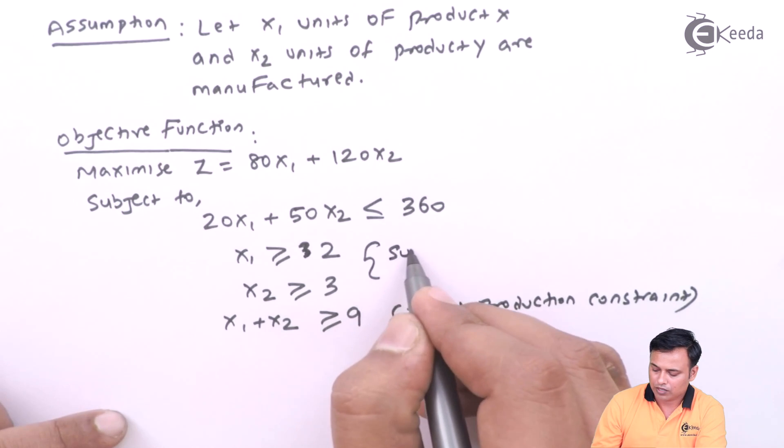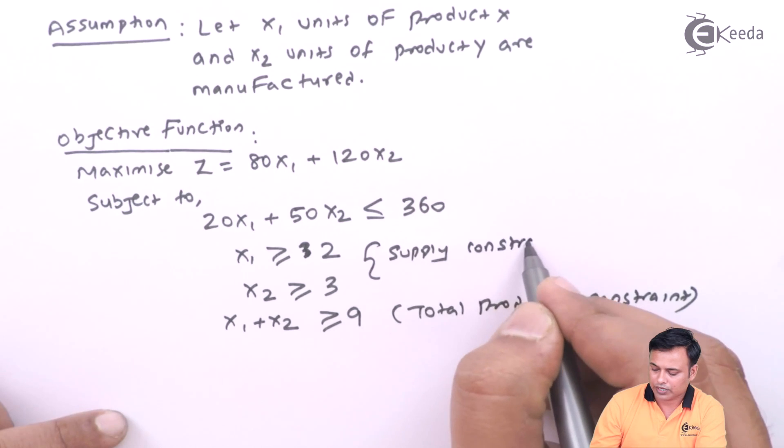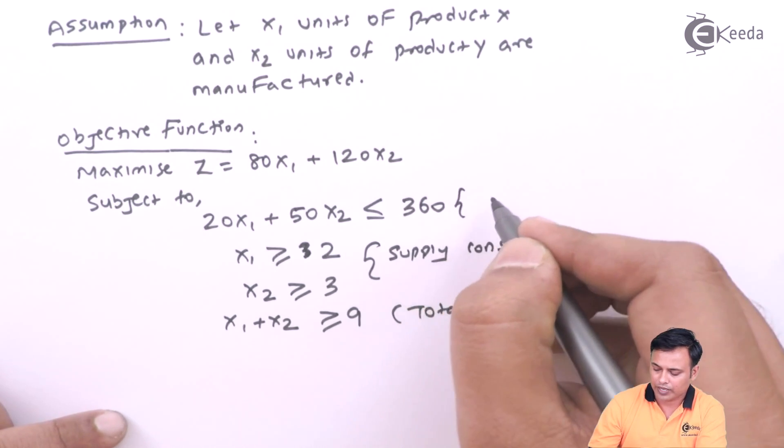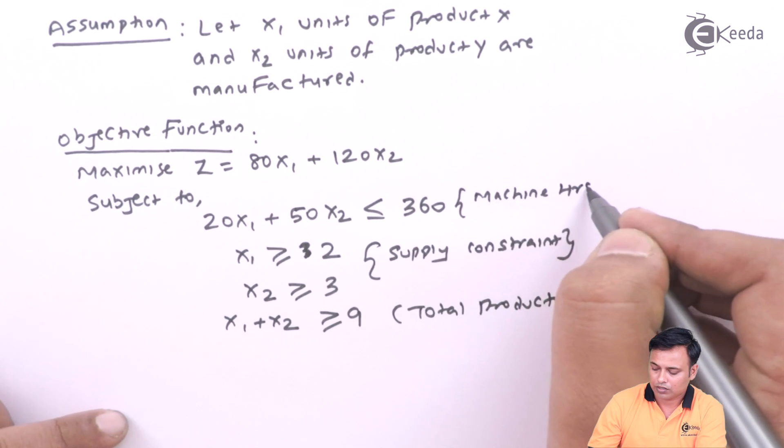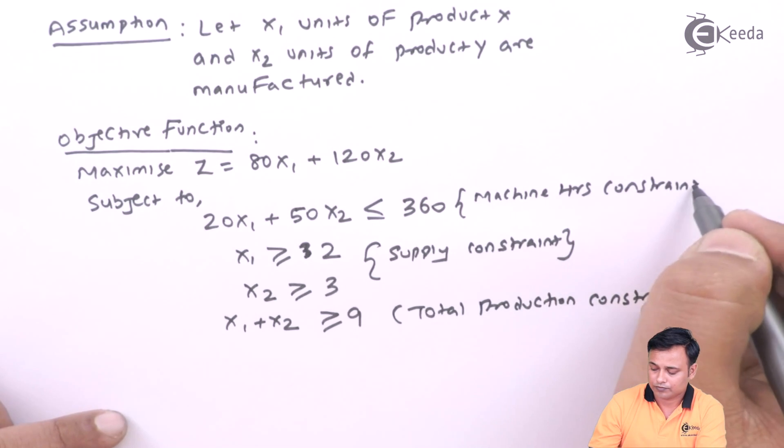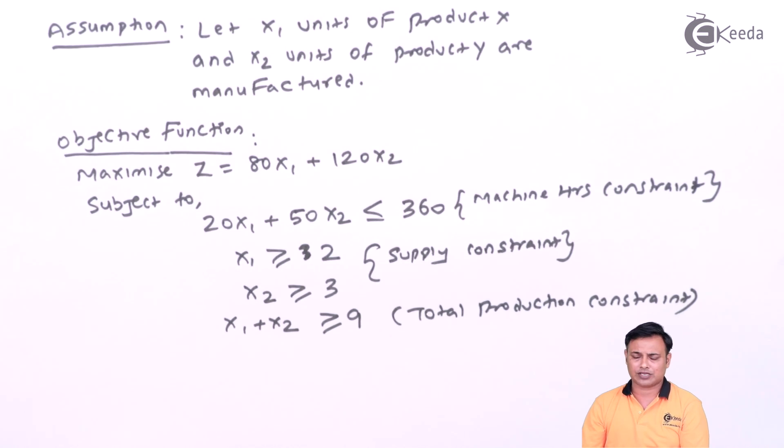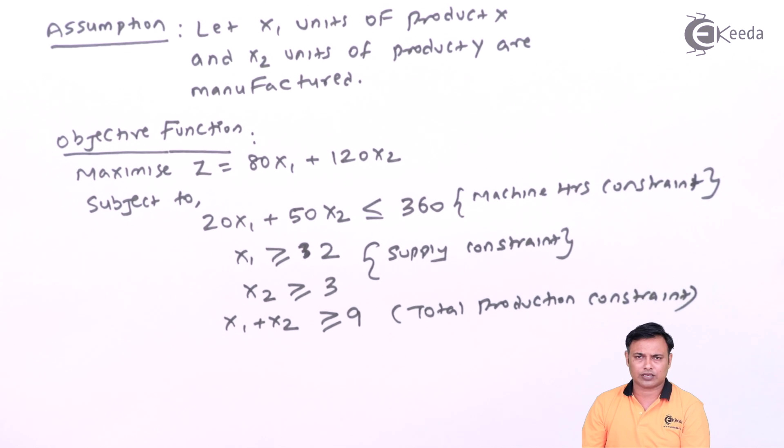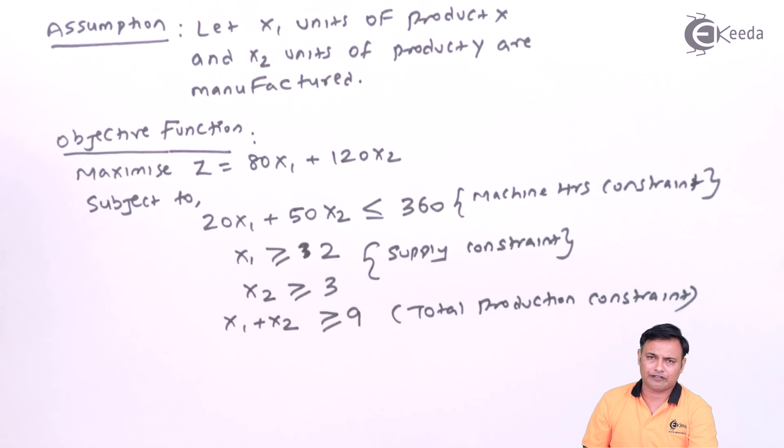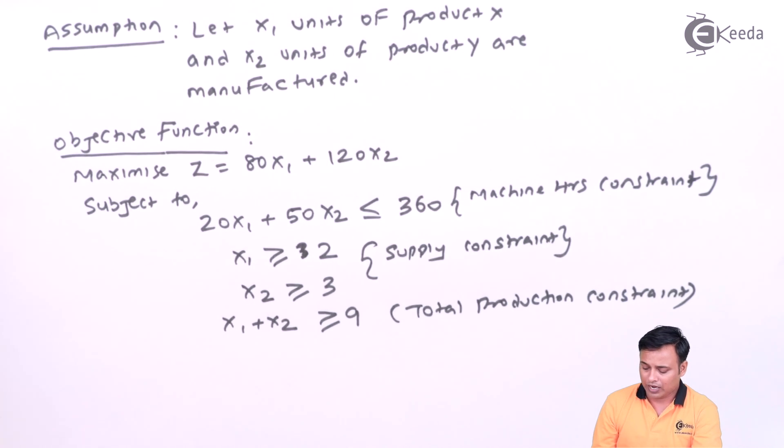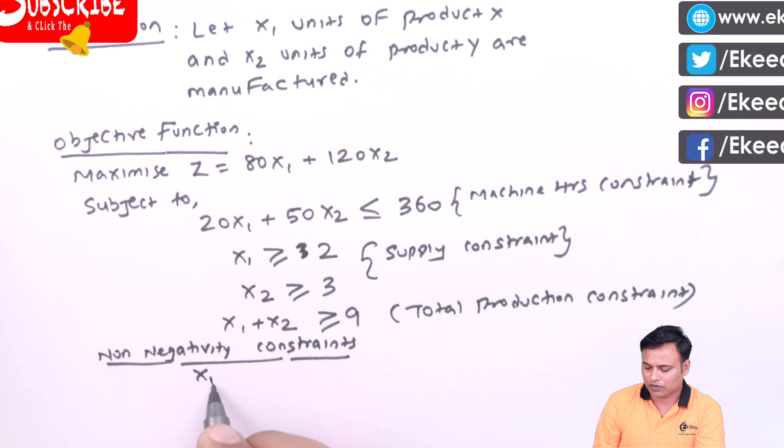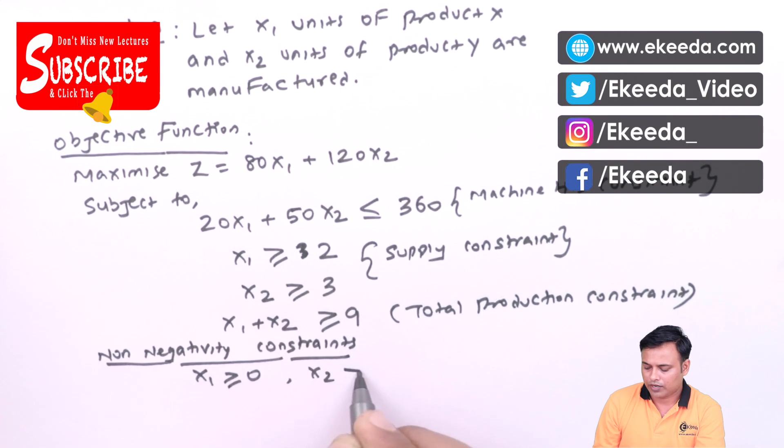These two are my supply constraints and this was my machine hour constraint. Writing down the constraints in the exam will be totally optional. You can skip this part in the exam if the time is limited. It's always better to note down those things while solving here in the classroom. At last, the non-negativity constraints: x1 more than equals to 0 and x2 more than equals to 0.